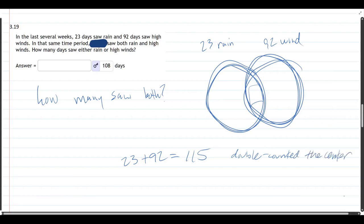Good news, though, if we take 108 days, that's how many are actually in here without double counting the center or the intersection.